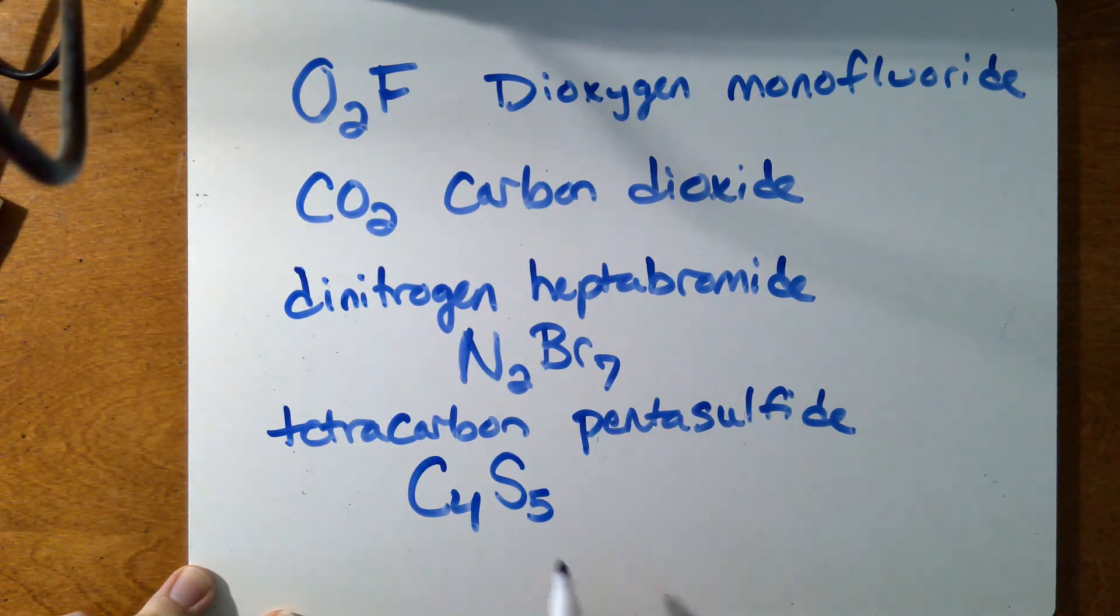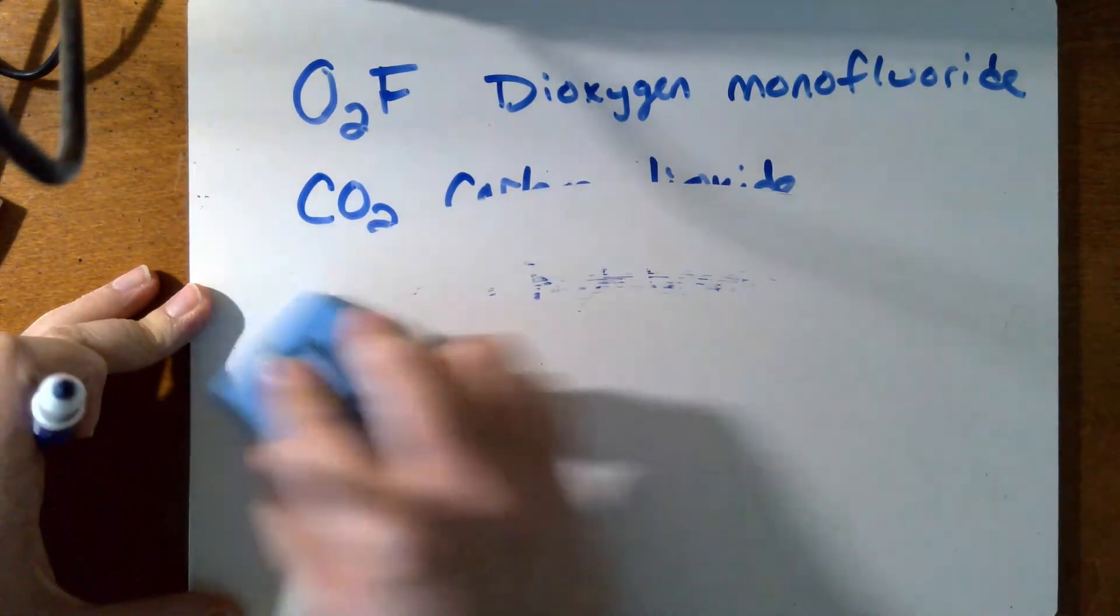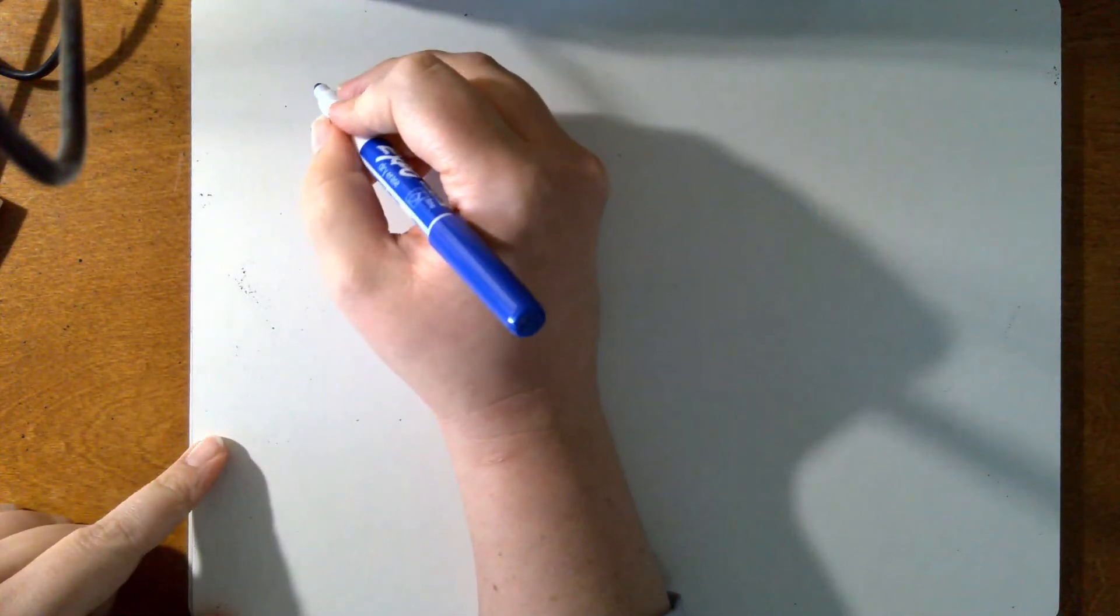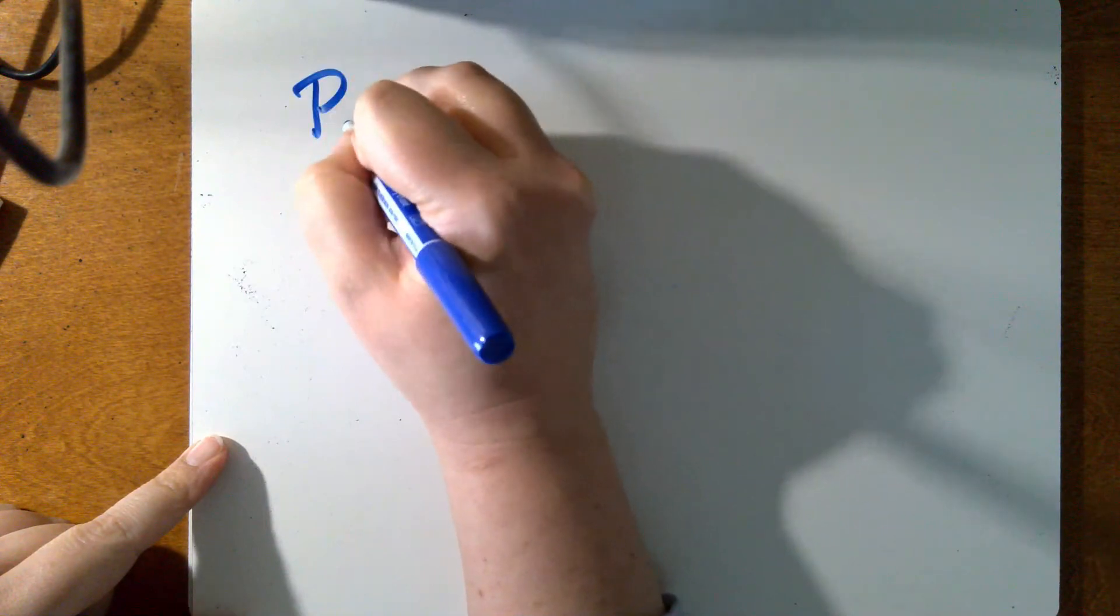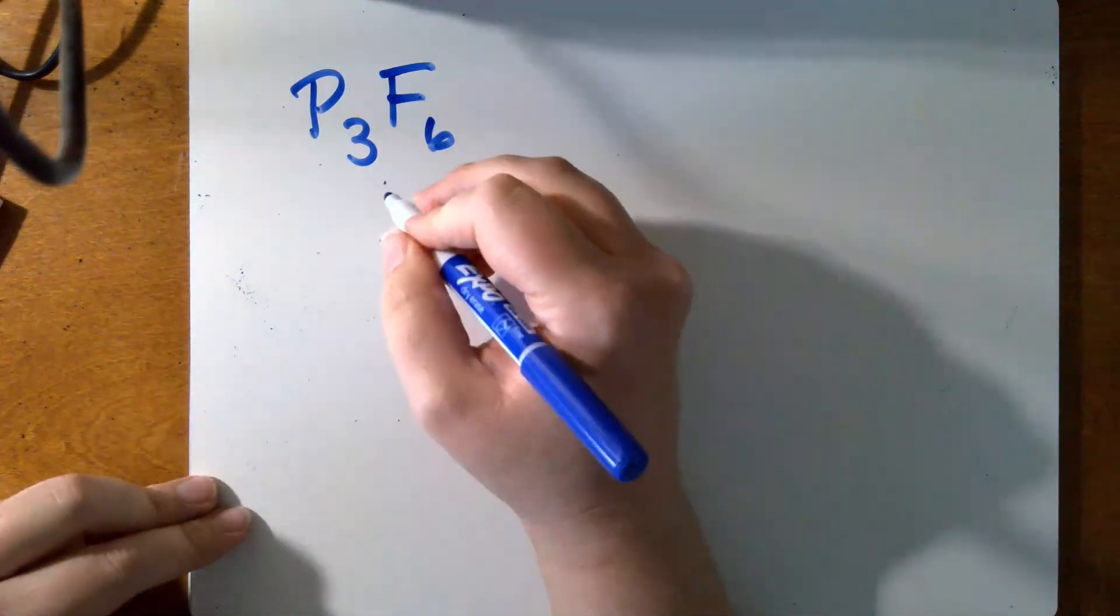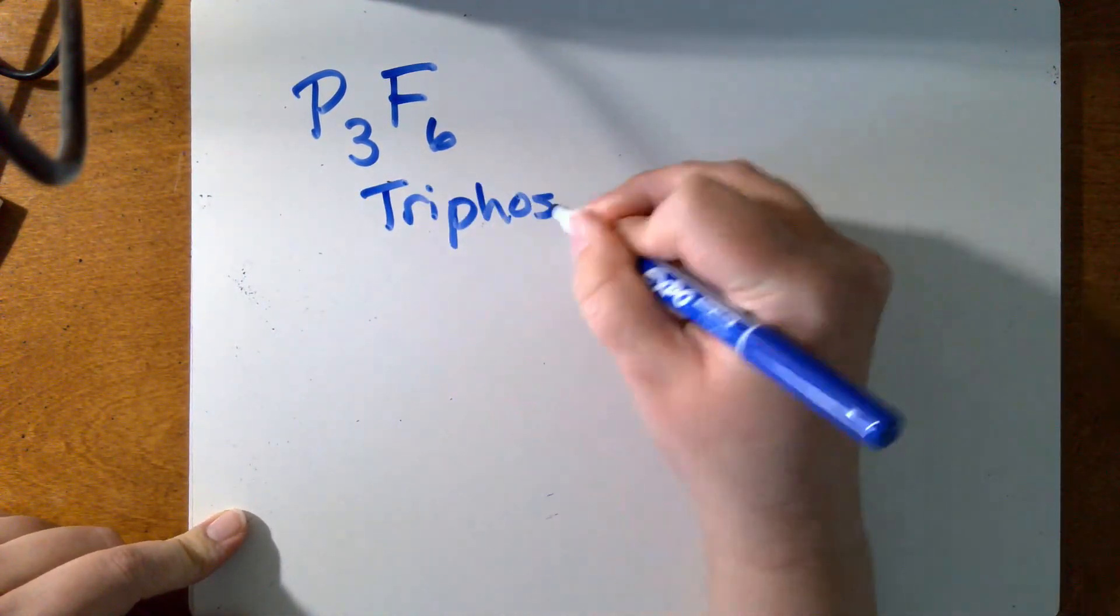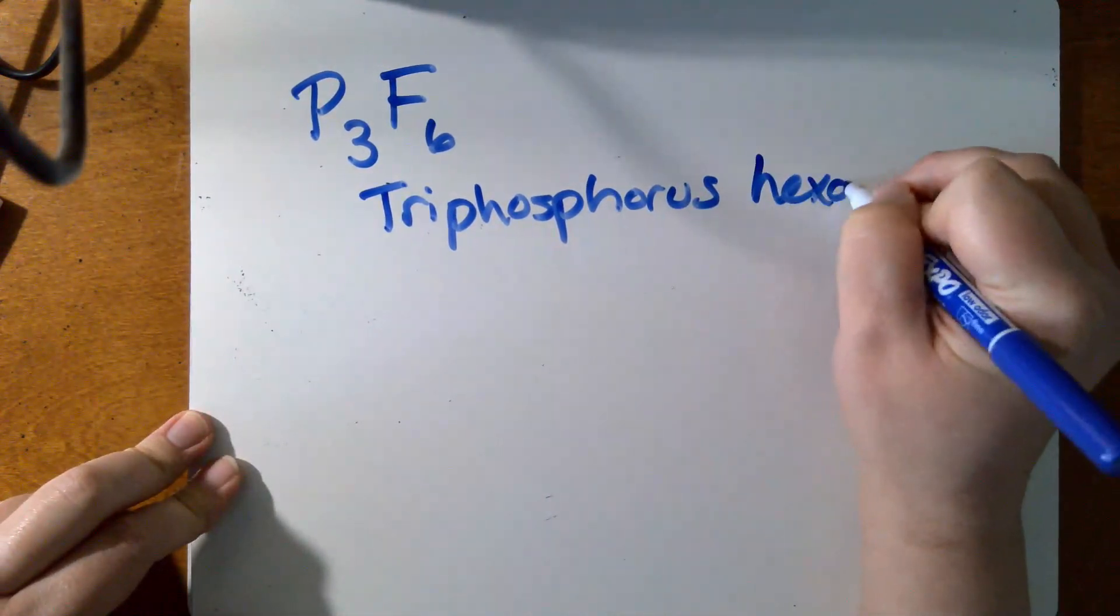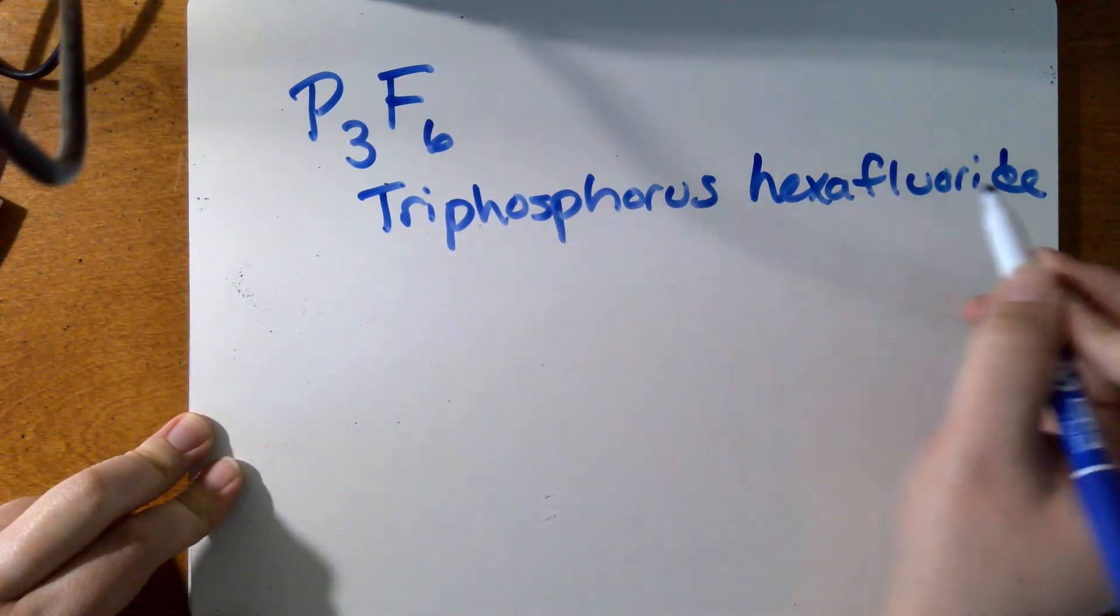And I'll give you one more going in the other direction. Let's say that I had P3F6. I would call this triphosphorus because there's three phosphoruses, hexafluoride. Three phosphoruses and six fluorines.